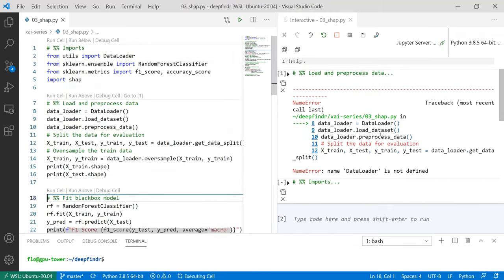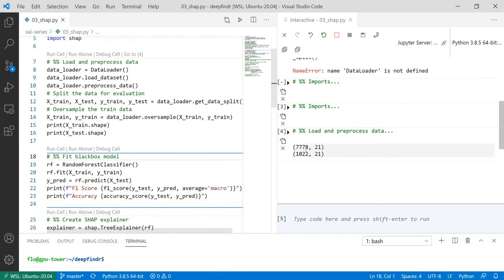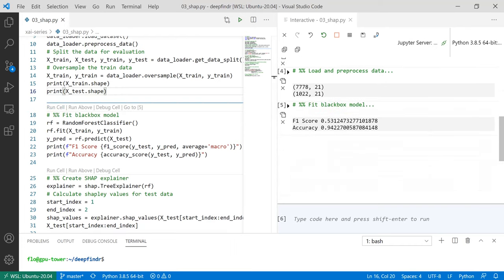So again we just import those things then we get the data. We have around 8000 train samples and 1000 test samples because of oversampling and the black box model is again this random forest classifier. We get an accuracy of 94% but remember our data set is quite imbalanced so this performance is not so good because our model tends to always predict no stroke and this is of course also reflected in the f1 score.